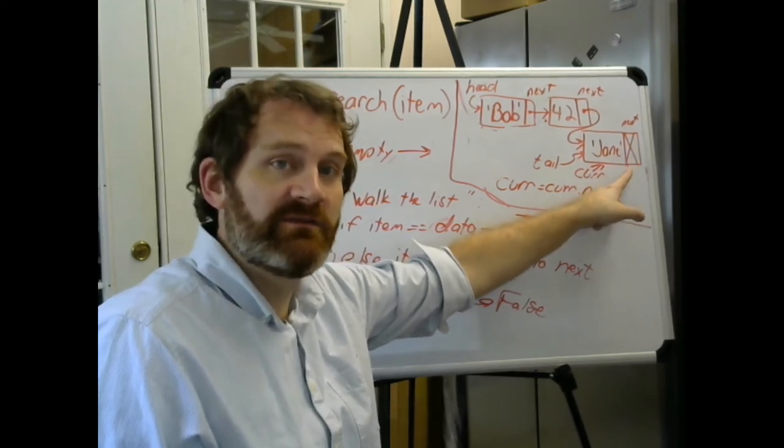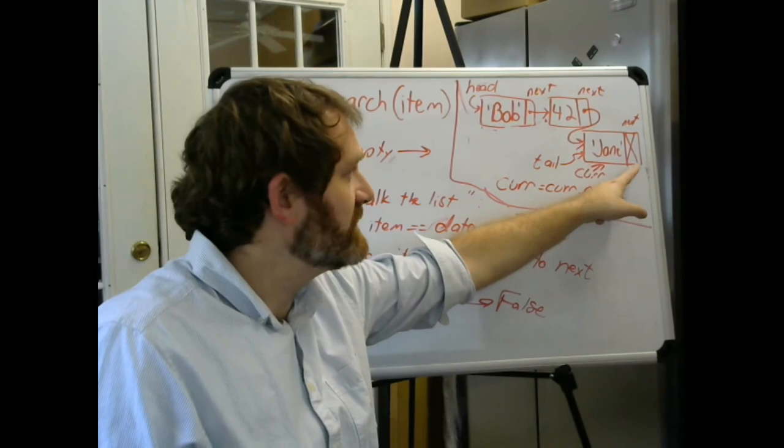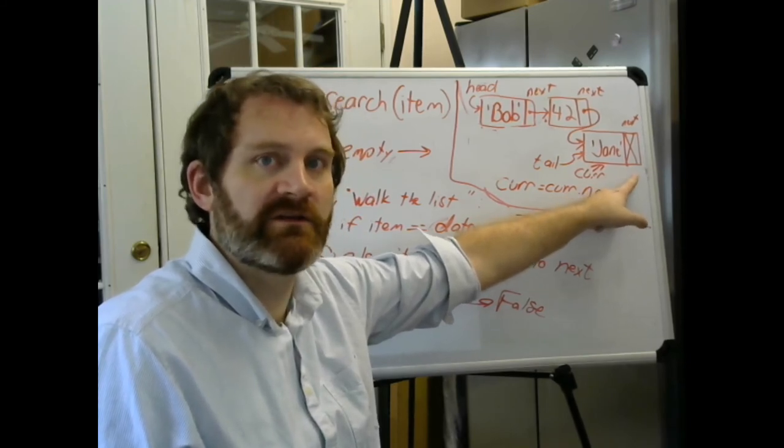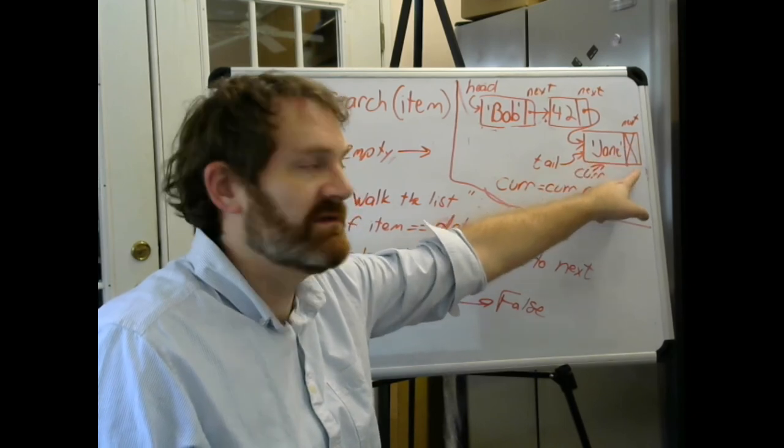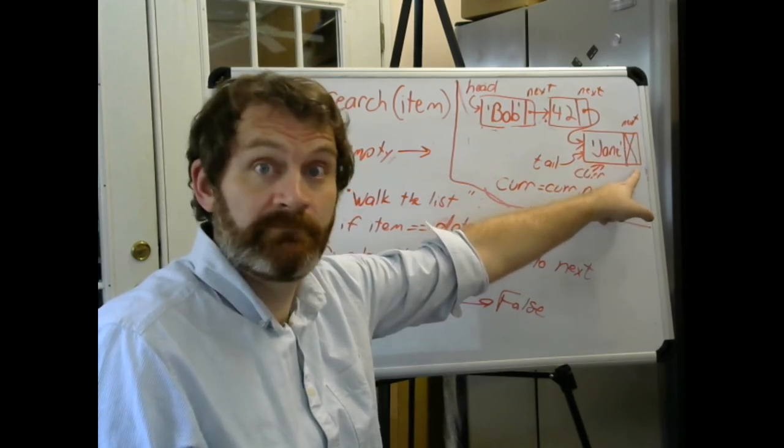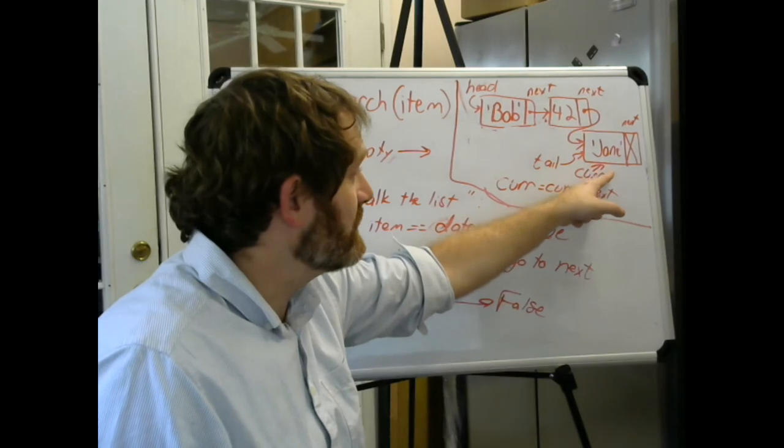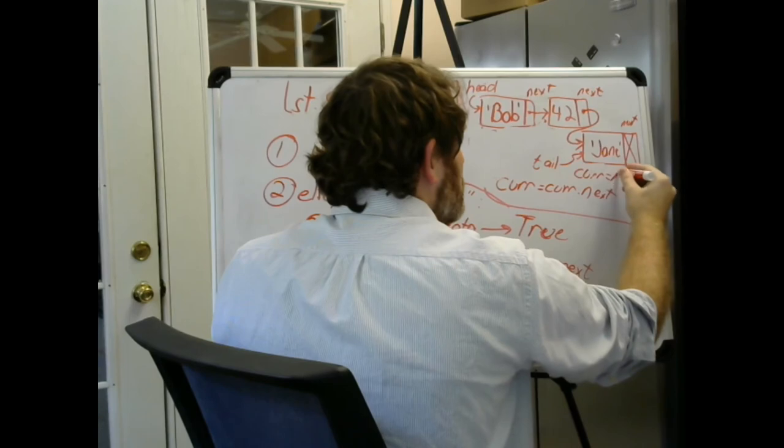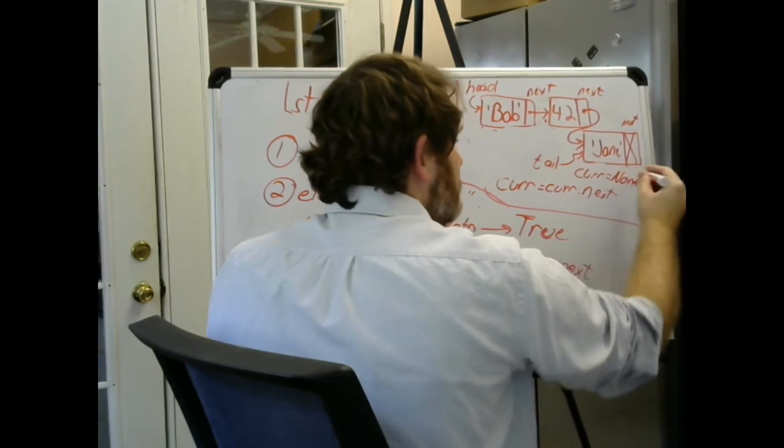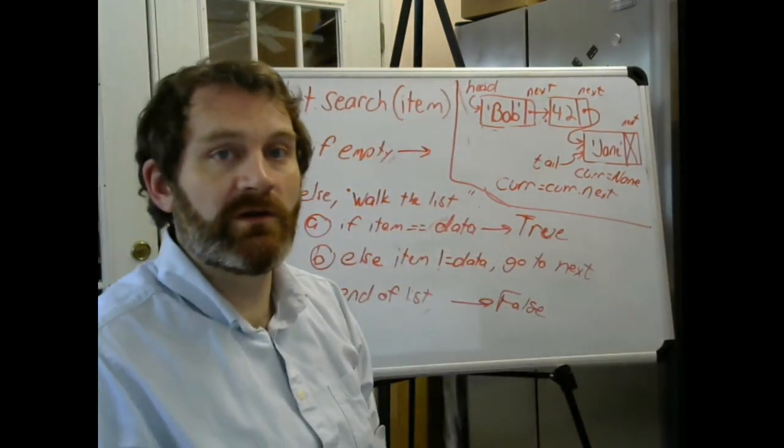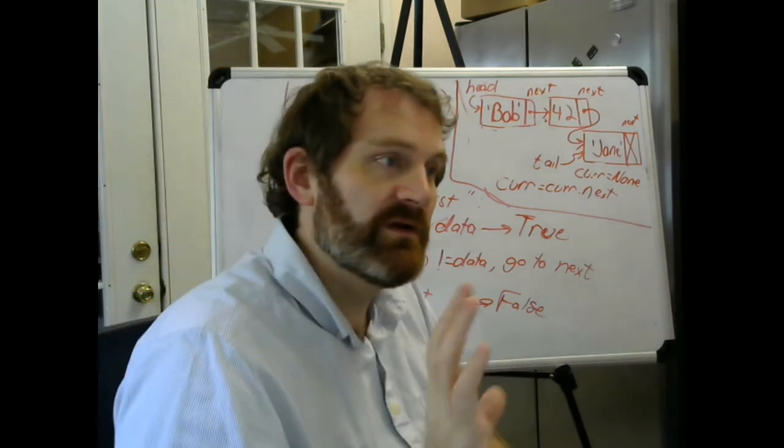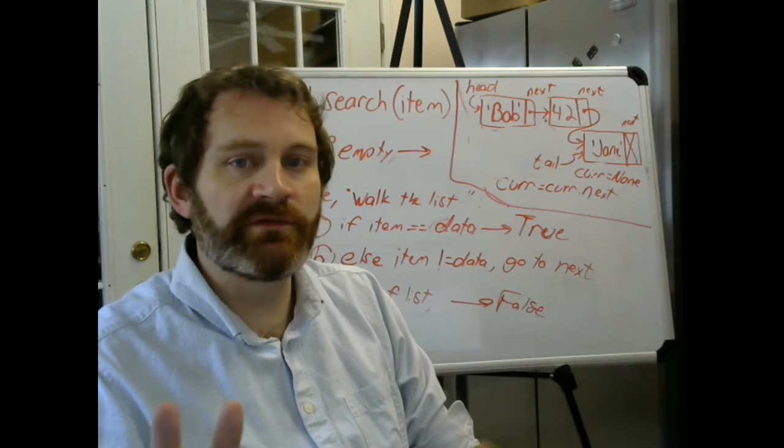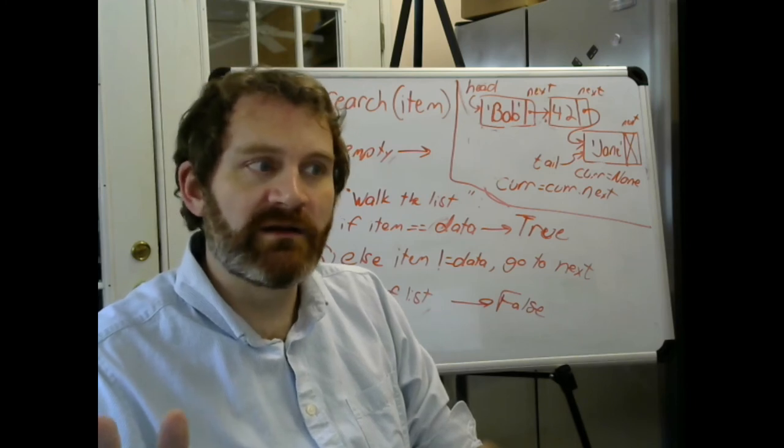So at this point, when I do cur gets cur dot next, cur will be equal to none. I've effectively walked off the end of the list. Done. I've gone through the whole thing. It's not there.